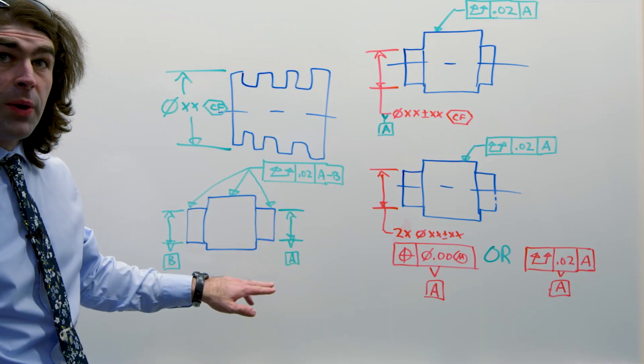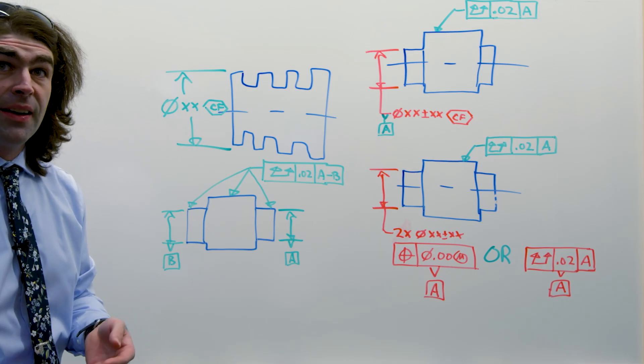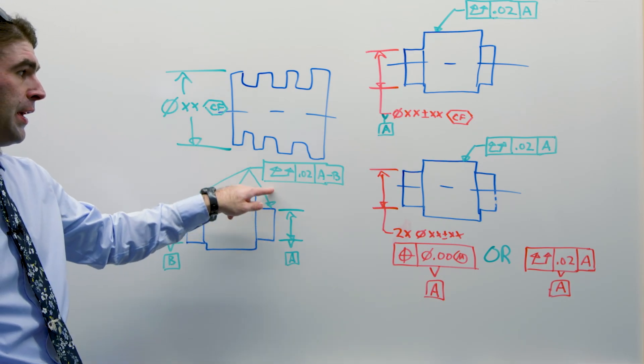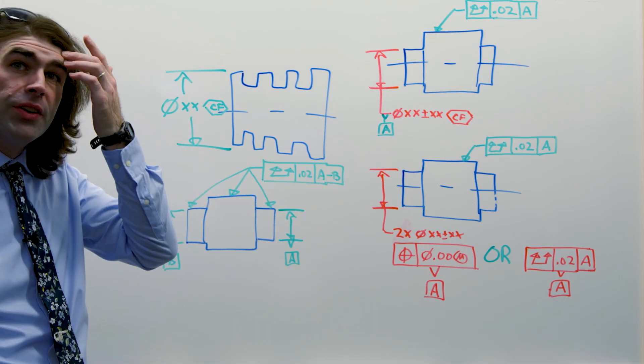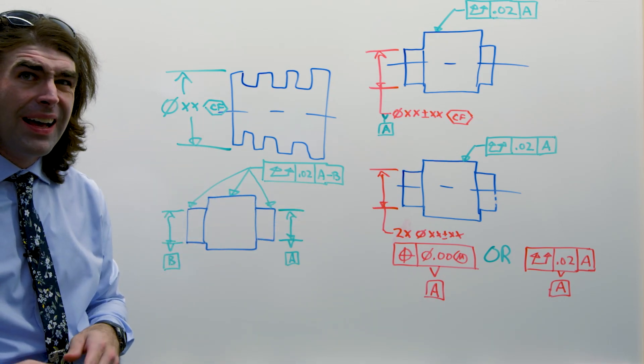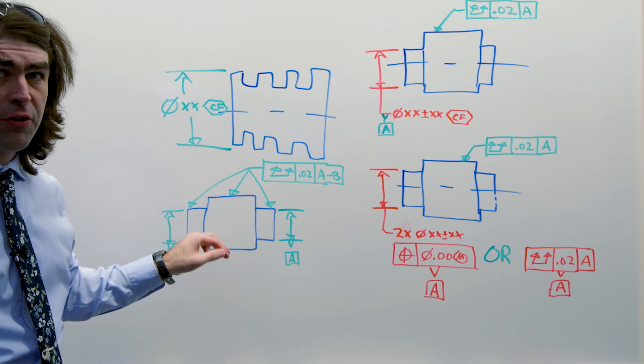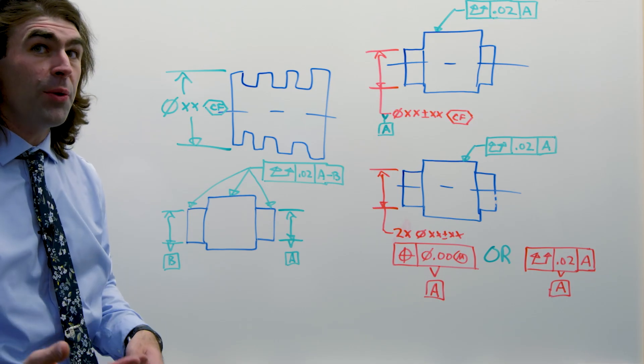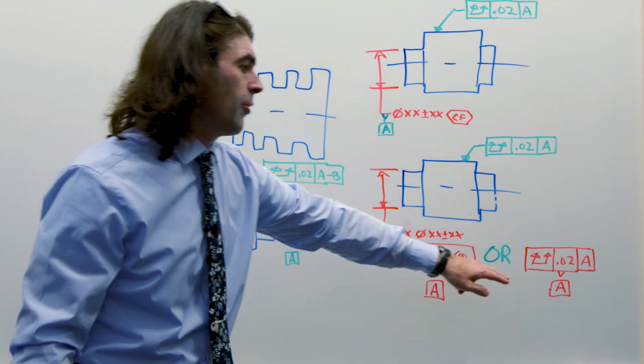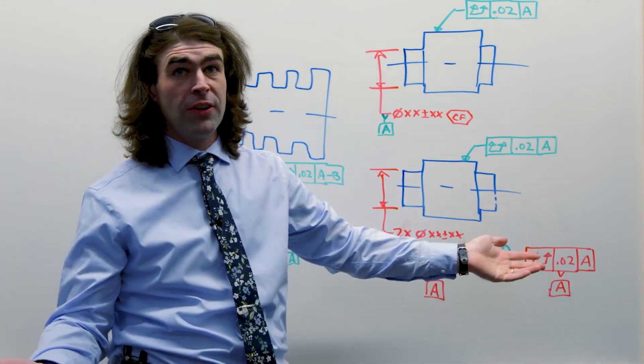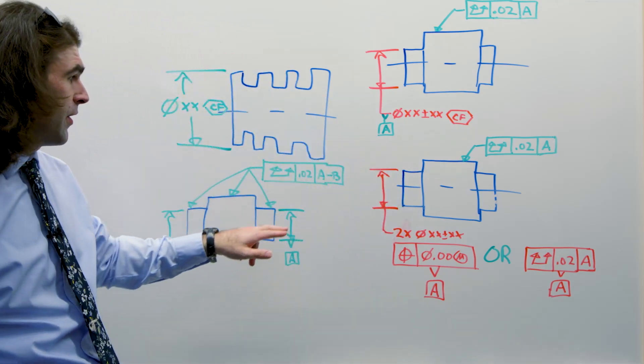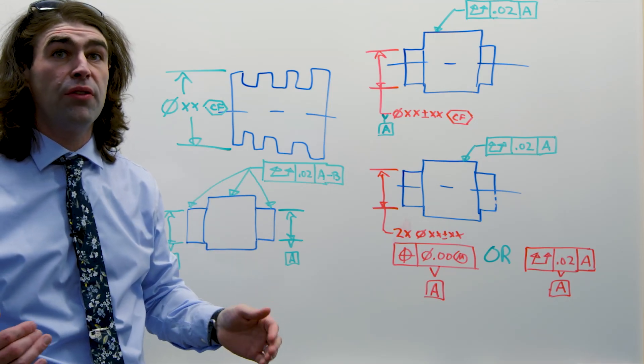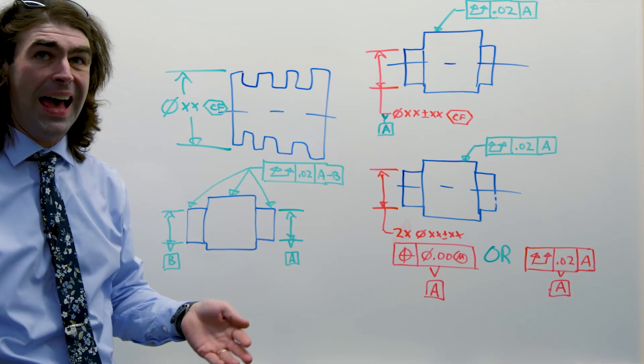So this is a situation that's shown in ASME Y14.5 where you've got datums A and B and you're basically doing a runout to all of the features. I think the way it's shown, it's got separate feature control frames, but the same idea. The datum is referencing itself. So I don't see it as a large leap to go here and just, it's referencing itself. It doesn't really make a difference if it's A, B, or just A. It's two features forming one datum axis.